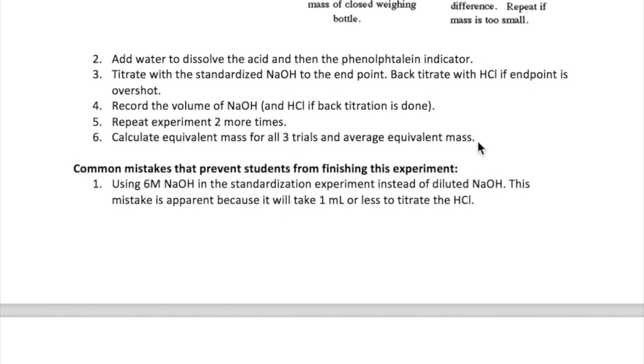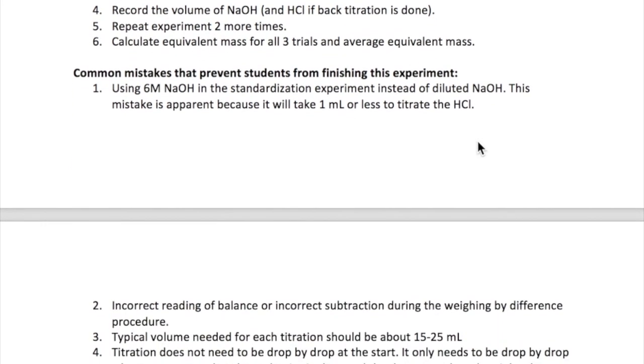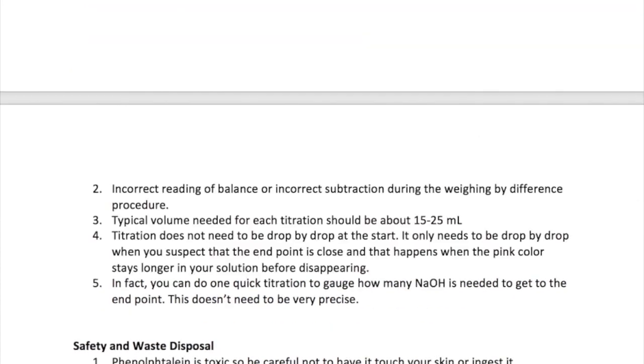Because this lab requires that everything be done in one lab session, I want to point out specific mistakes that I have seen over the years that will result in poor data quality or unfinished experiments. A common issue is students pouring the stock 6 molar NaOH into the burette instead of the diluted NaOH that you're supposed to make. This mistake is apparent when you need less than 2 milliliters to titrate your HCl. If this occurs, you'll have to rinse the whole burette out with copious amount of deionized water and refill it with the diluted NaOH.